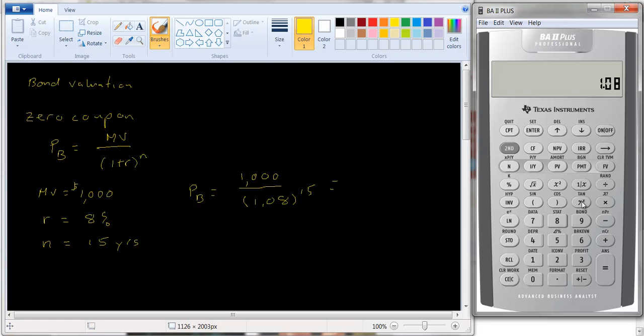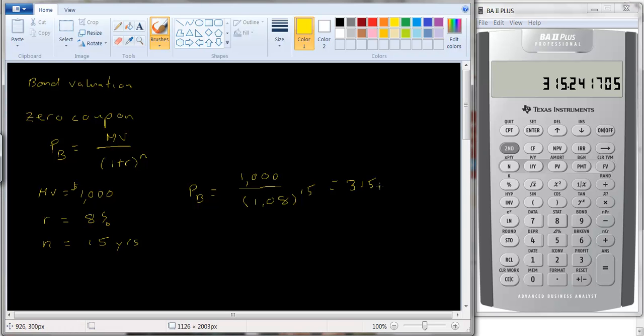1.08 raised to the 15th power. So that's this number. We need to flip it over so we hit the 1 over x key. And then we multiply it by the 1,000. And it's $315.24. So if you pay $315.24 for something that gives you back $1,000 15 years from now, you'll have earned an 8% return.